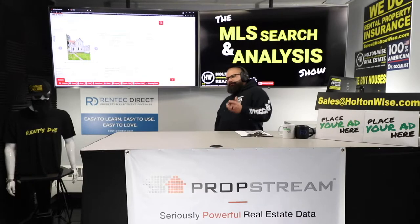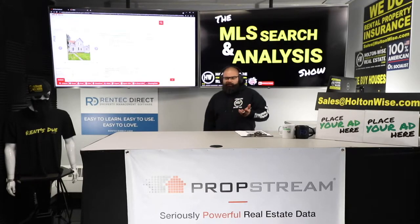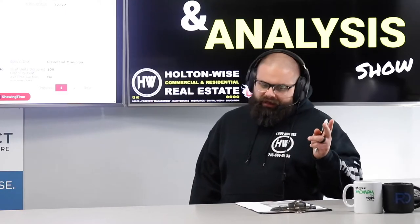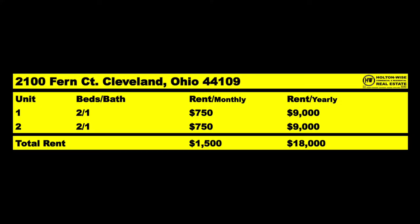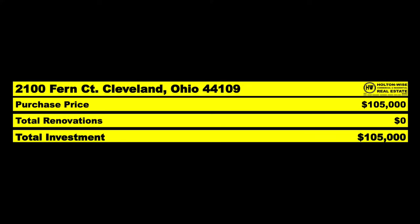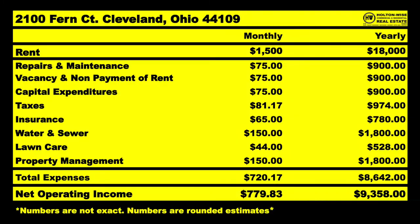They didn't say exactly what they're bringing in per unit — I'm guessing they split it, roughly $625 each. But in reality, these are $750 units. So I think it's worth $105,000, not $115,000. They need to come down $10,000 in price for this to make sense for the buyer. $1,500 comes in — $18,000 for the year. After calculating your fixed and variable expense estimates, that's about $9,356 on average I think you're going to make.